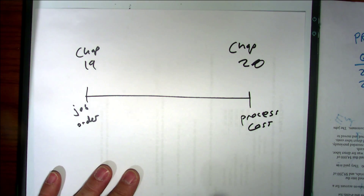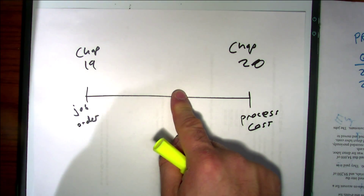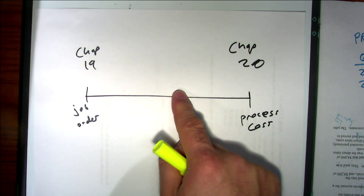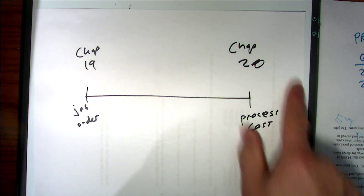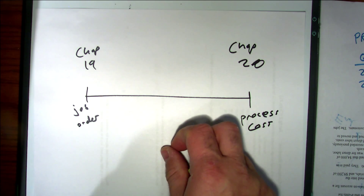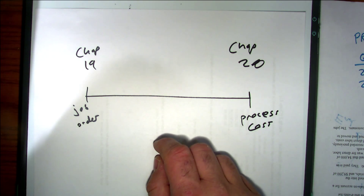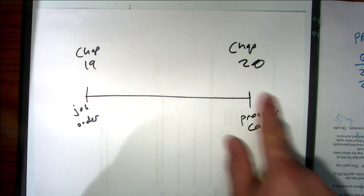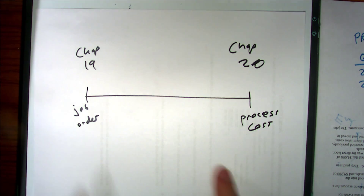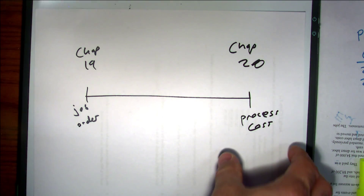I do want you to understand that there are products that are kind of hybrids — products that have some characteristics of job order and some characteristics of process costing. For example, I'm getting ready to purchase a new furnace and air conditioner for my house. Some of that will be process costing — they're making the components in a mass-produced way — but some will be job order, where I say I want this specific component, I want a humidifier put in. So that's a little bit of a hybrid. It's easier to teach the extremes, but I want you to be aware hybrid situations exist.